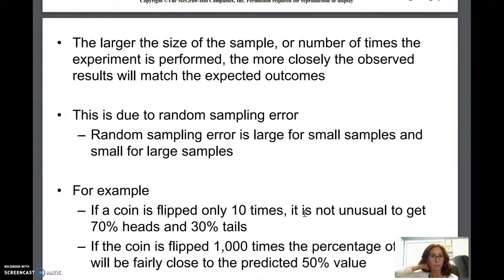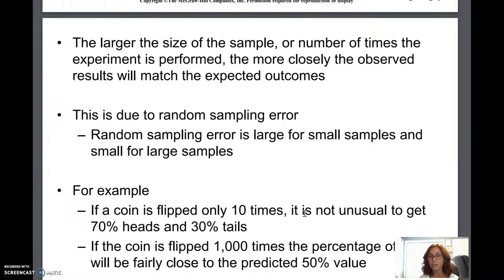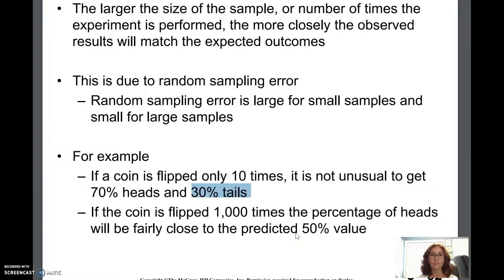One of the issues in science is something called random sampling error. This means you are not repeating the experiment an infinite number of times — you do it just a few times. A few times might be hundreds, but it's not infinite. So if you flip a coin only 10 times, you might get 70 heads and 30 tails.